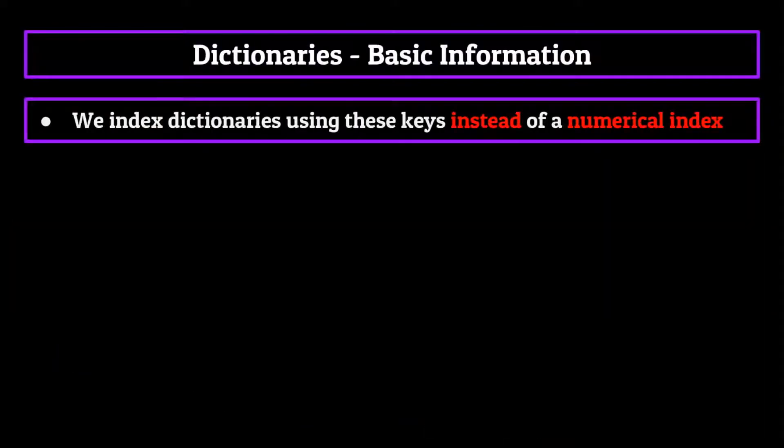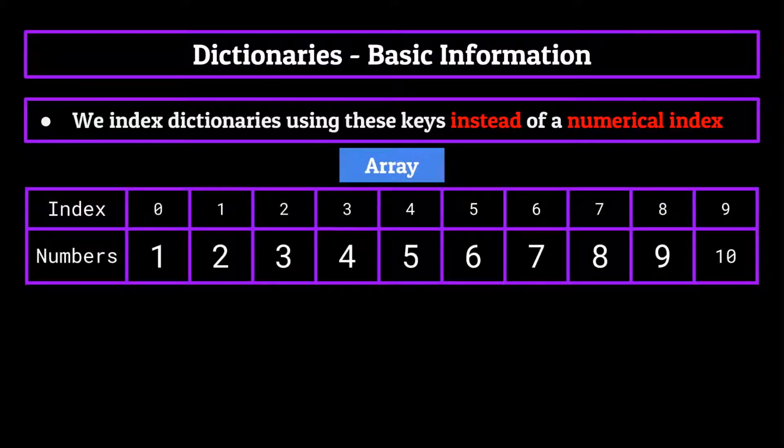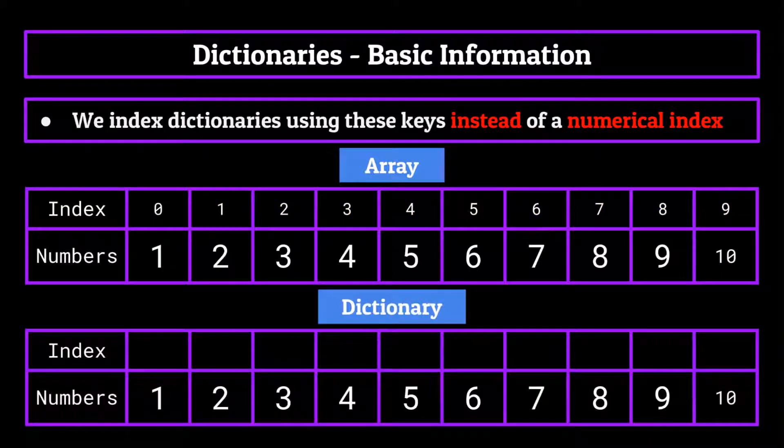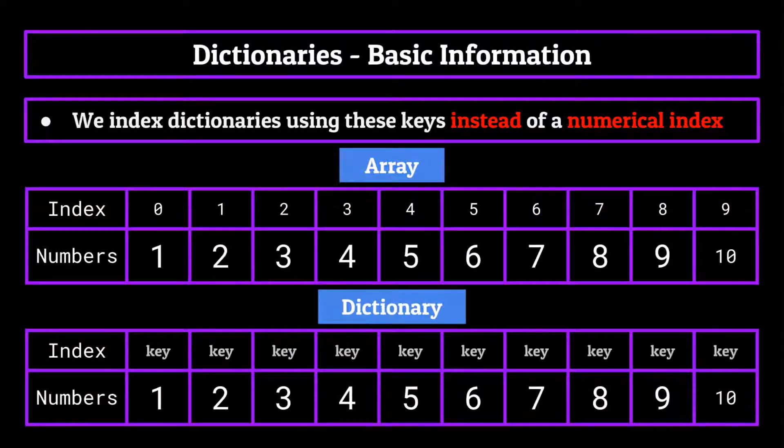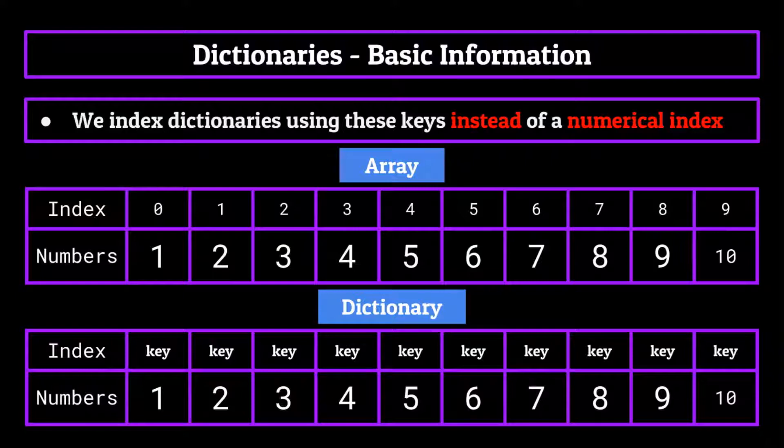This is very different from many of the data structures we've talked about previously because we index dictionaries using these keys instead of say a numerical index. For example, with an array, we would index each element within the data structure according to a numerical value, which started at zero and ran the length of the array. With a dictionary, however, we would index each element by using its key instead of some arbitrary integer and obtain information through that method instead.